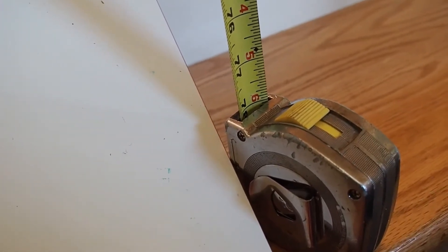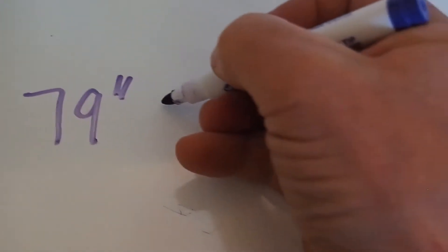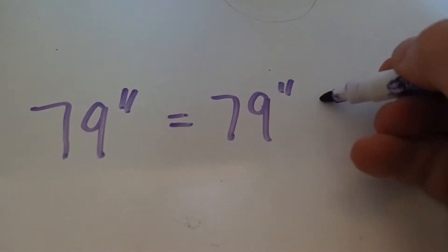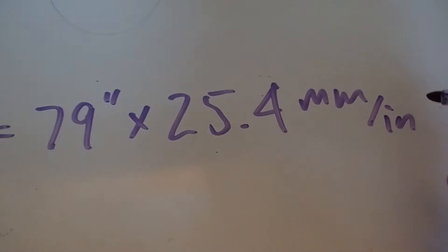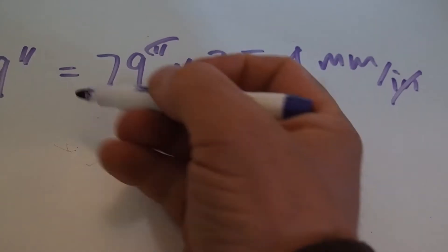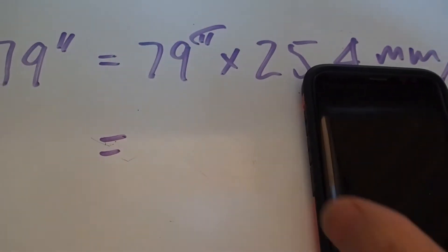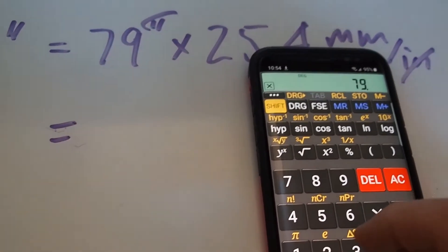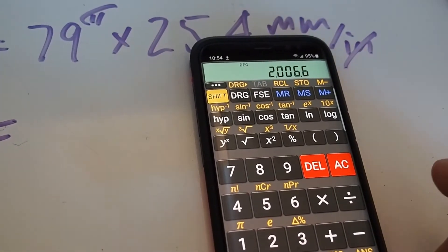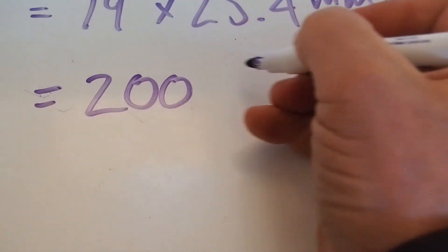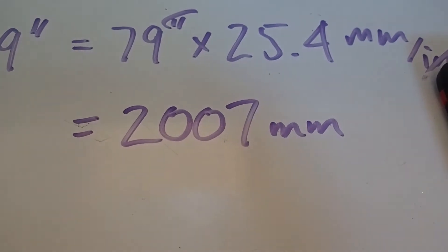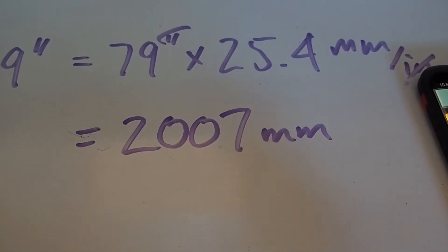So what does 1,950 millimeters equal in Imperial? My stairs are 79 inches. 79 inches times 25.4 millimeters per inch — the inch units cancel out and we're left with millimeters. 79 times 25.4 equals 2,006.6 millimeters, so we'll call it 2,007. Since 2,007 is bigger than 1,950, these stairs meet code as far as the headroom requirement goes.